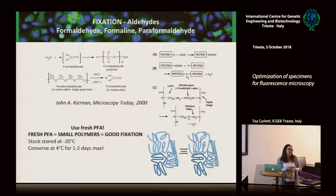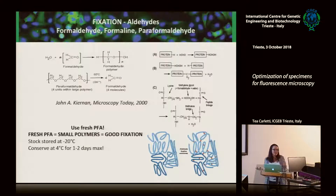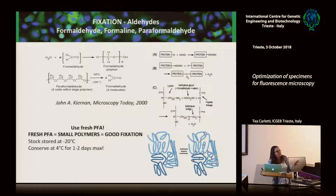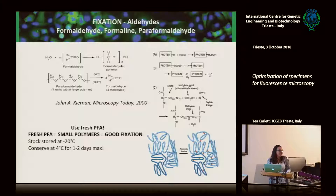To avoid bad fixation, you must prepare fresh PFA. What we do in the lab is prepare a big stock of PFA, store it at minus 20°C in small aliquots. When I need 2 ml of PFA to fix my sample, I thaw it, heat it, make sure it is very well dissolved, and then use it. If there is some leftover, I keep it in the fridge for a few days — I would say maximum two days. If you have old PFA in the fridge, just throw it in the chemical waste.